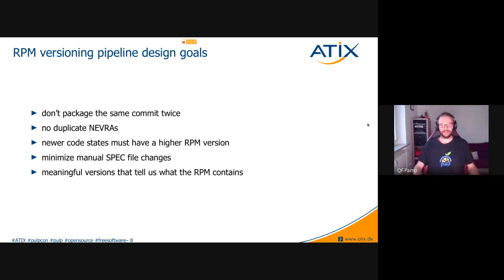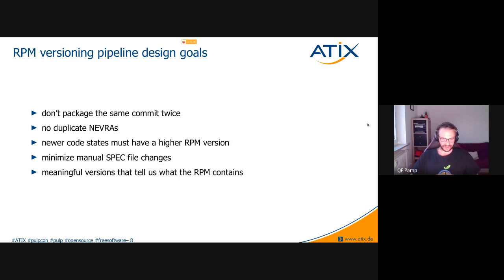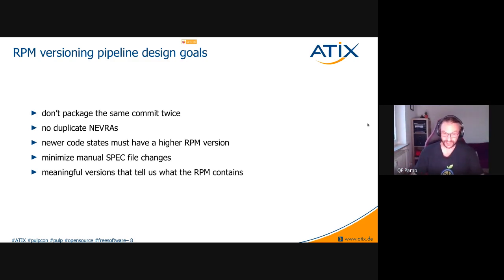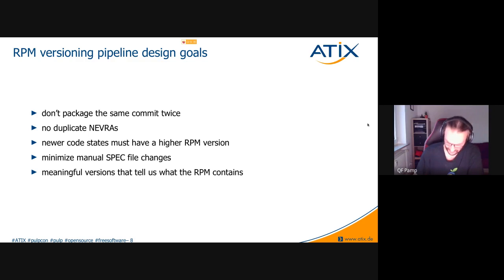The final design goal: meaningful versions that tell us what the RPM contains. Once we have a built RPM installed on some system — maybe a customer system, test system, or internal production system — I want to see immediately from the RPM version what that package actually contains in terms of source code, so that when test comes back saying something is broken, I actually know what they installed.